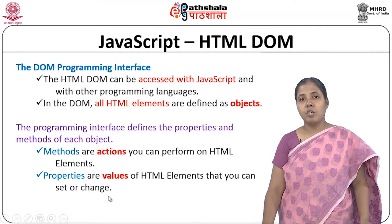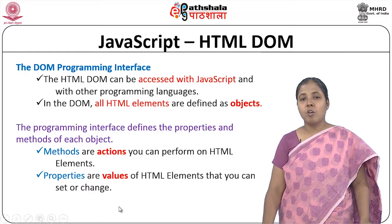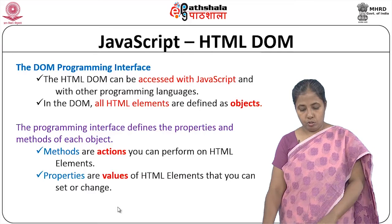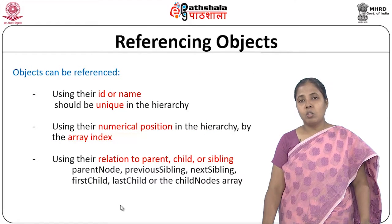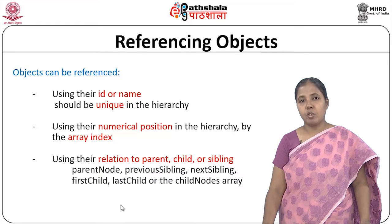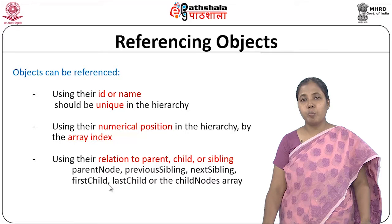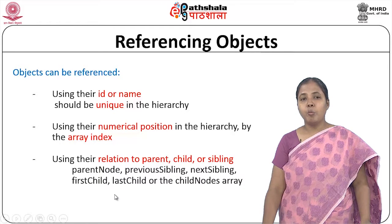The programming interface defines the properties and methods of each object. Methods are actions you want to perform on any HTML element; properties are the values of HTML elements which you can set or change. Objects can be referred to using their ID or name — which must be unique in the hierarchy — or they can be referenced using their numerical position in the hierarchy, such as an array index.